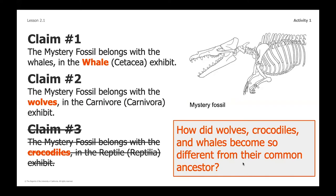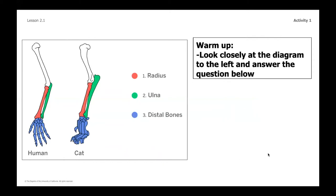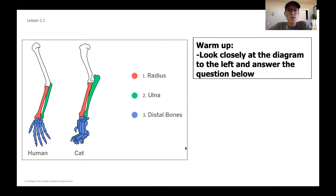As a last reminder, if you need to grab a pencil and a piece of paper, we're going to start our warm-up now, which is something you may want to write down as you go through. This image is one we've looked at before, and for your warm-up I want you to look closely at the diagram. It's color-coded showing some of those shared structures: the radius, the ulna, and the distal bones.